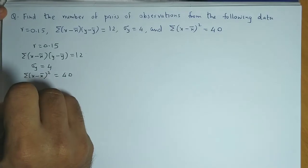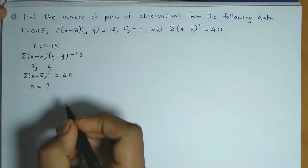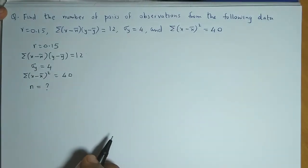We need to obtain the value of n, that is the number of pairs of observations.